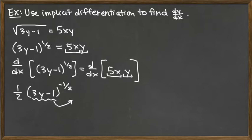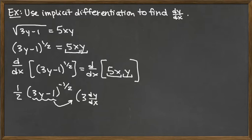Then we take the derivative of the inside function. The derivative of 3y minus 1 — we have a difference, so we can just take the derivative term by term. We first take the derivative of 3y with respect to x, which would be 3 times the derivative of y with respect to x using the constant multiple rule — so we'd have 3 dy/dx. The derivative of the constant 1 is just 0, so we have minus 0 and we can close off our parentheses.